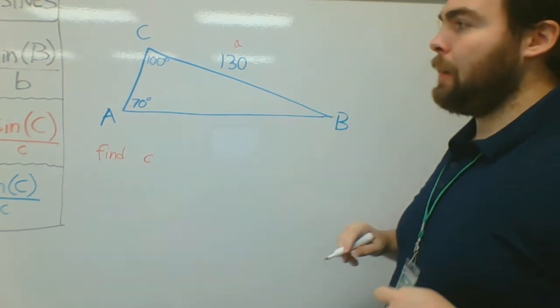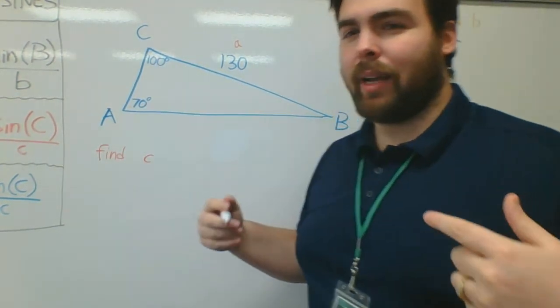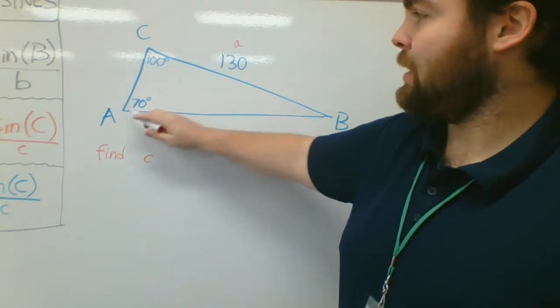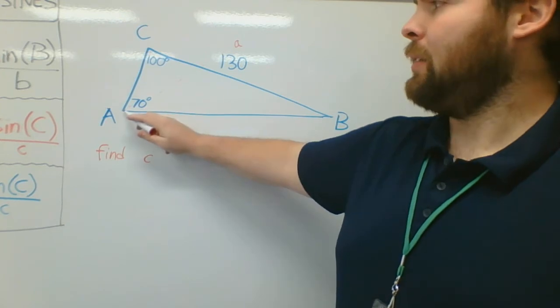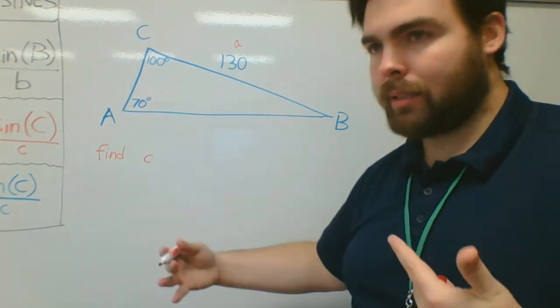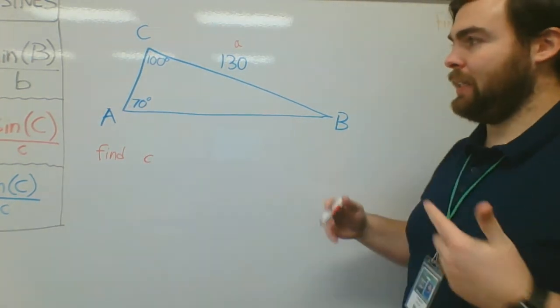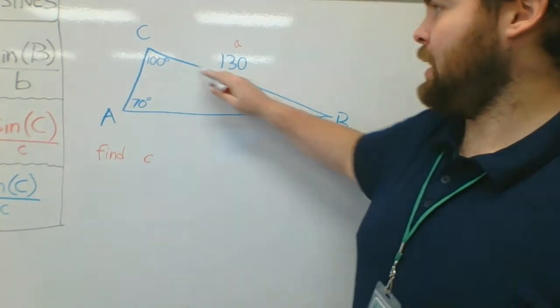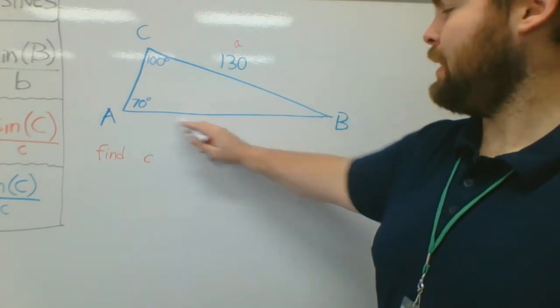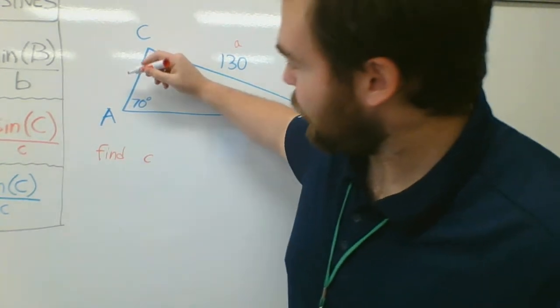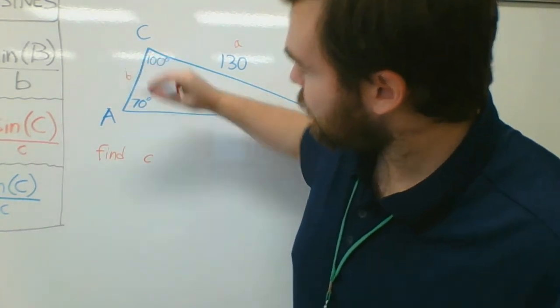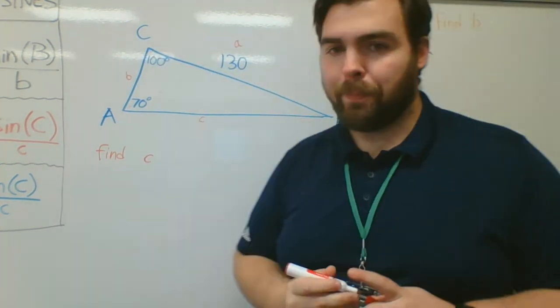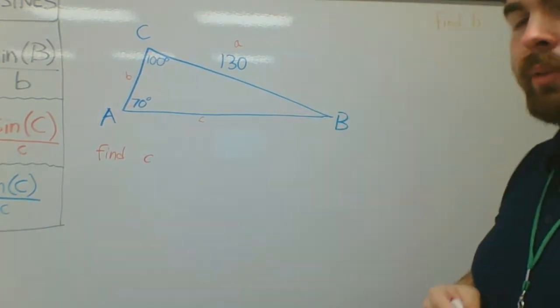If you're not sure which side is across from it, I know sometimes it messes a few people up. Just this side doesn't touch this side or this side. The angle across means it's not going to be touching angle B. So B, for example, is this over here because this side touches B and this side touches B. So this side is little B.